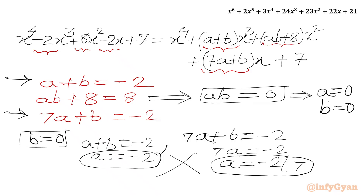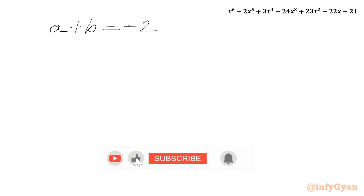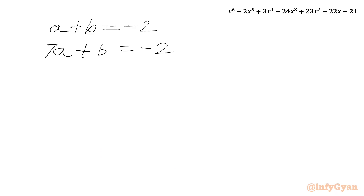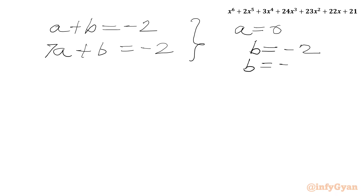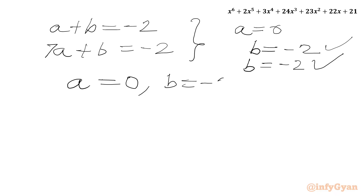So we accept a equals 0. Plugging a equals 0 into both equations: from the first equation, 0 plus b equals minus 2 gives b equals minus 2. From the third equation, 7 times 0 plus b equals minus 2 also gives b equals minus 2, which is consistent. So we can confirm a equals 0 and b equals minus 2.